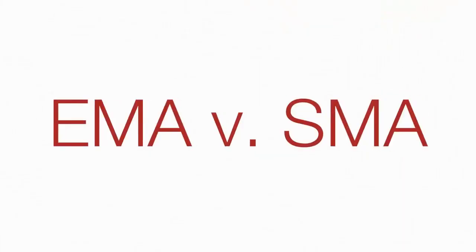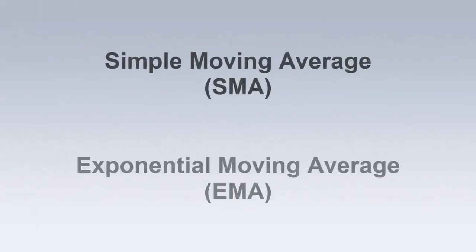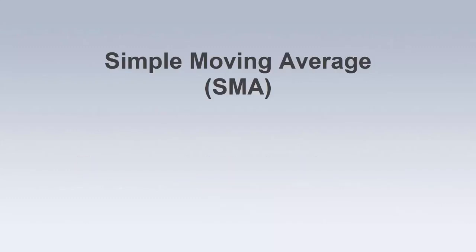There are two primary types of moving averages traders use to identify market trends: the simple moving average and the exponential moving average. These tools are designed to smooth out market data, showing an average value of an instrument based on a user-defined period of time.